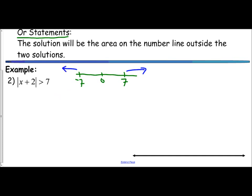Looking at the number line, the expression on the right side starts at 7 and goes to the right. So the first inequality we have is x plus 2 is greater than 7 — similar to how we handle absolute value equations, just dropping the bars and leaving it as is. The other one involves the 'or': x plus 2 relates to negative 7, going further and further to the left away from 0. So x plus 2 is less than negative 7.